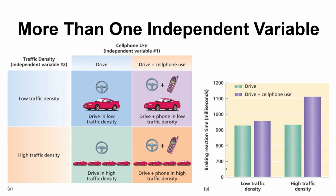Here we have a study set up with two independent variables. They wanted to look at cell phone use — people driving without a cell phone versus driving while using their cell phone. The second independent variable is the amount of traffic on the road: low traffic density versus high traffic density. So now we have four groups: driving without a cell phone in low traffic, driving without a cell phone in high traffic, driving with a cell phone in low traffic, and driving with a cell phone in high traffic — each of the possible combinations of our two independent variables.